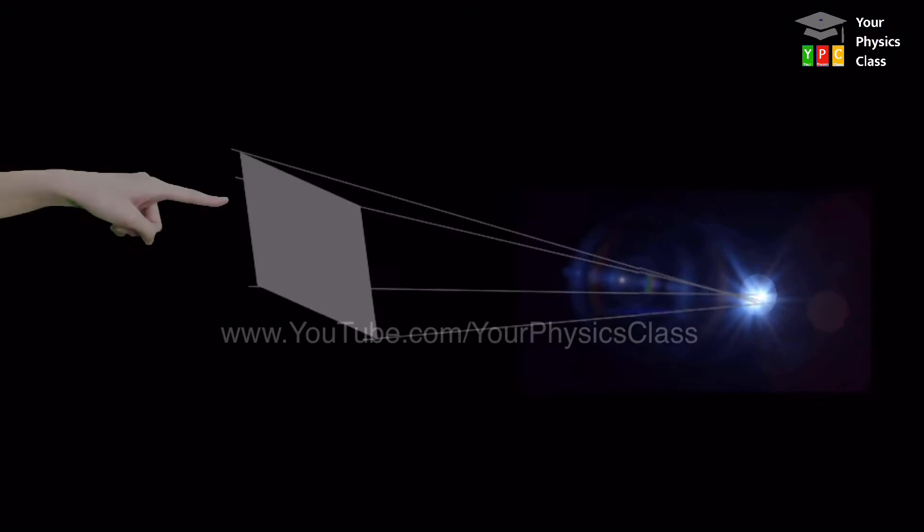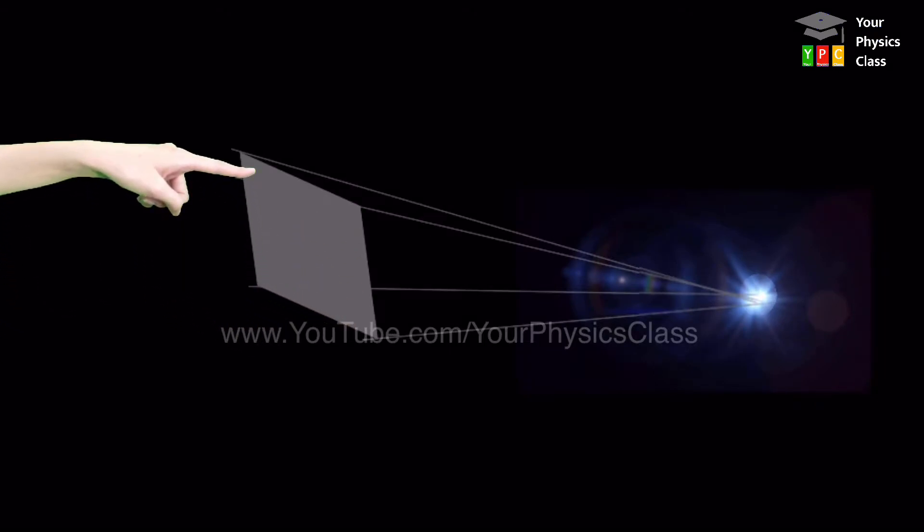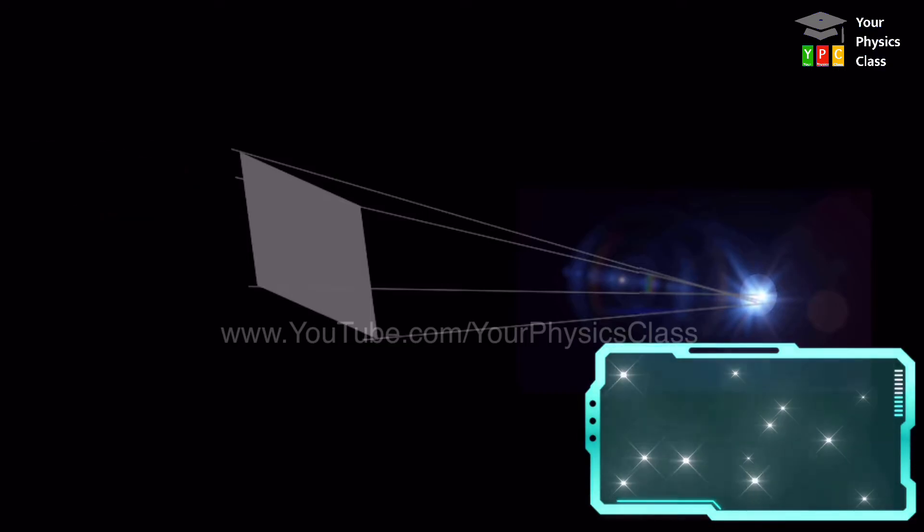If the source of light is at infinity, then at a given place, we get plain wavefront irrespective of shape of the source.